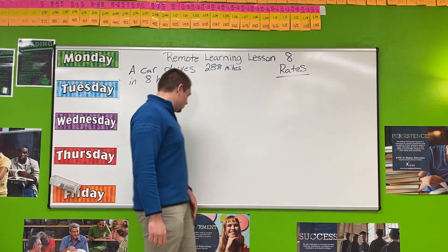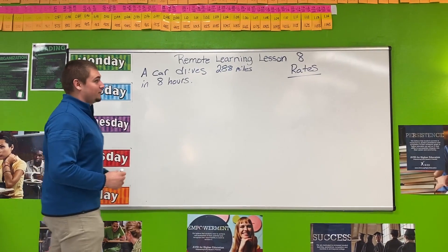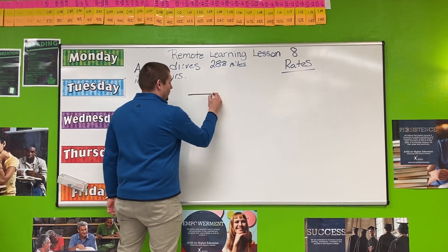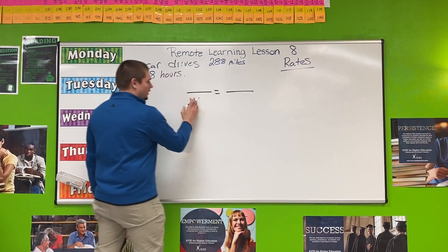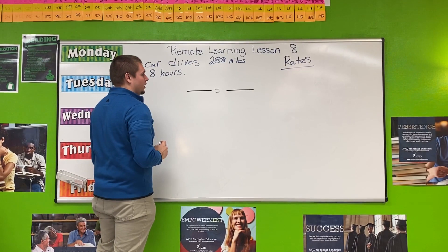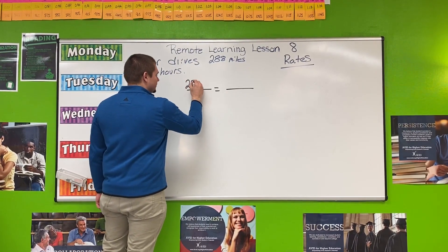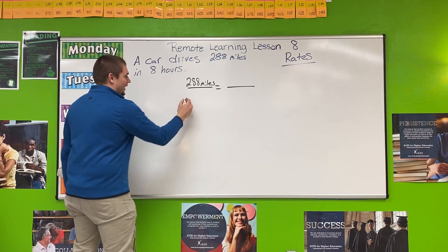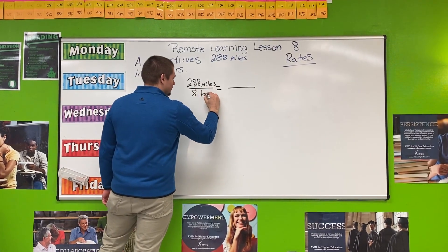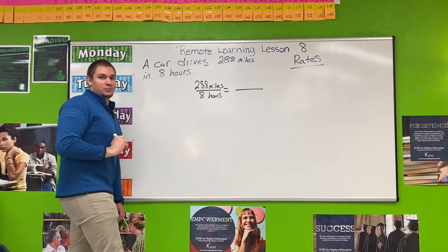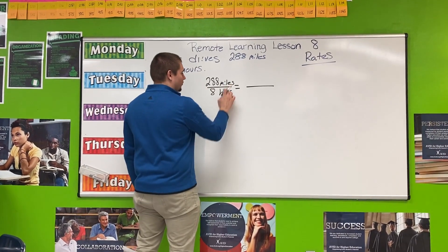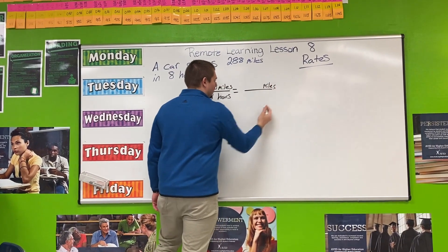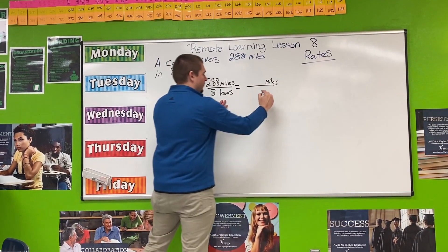We are going to use that information to find our unit rate. We can set this up in two different ways. I'm going to show you in a proportion — I have one thing that is equal to another. 288 miles is on top and I do that in eight hours. The most important part is that we need to match our units. So if miles is over here, miles need to be the same thing over here because we do have an equal sign, and same for hours.